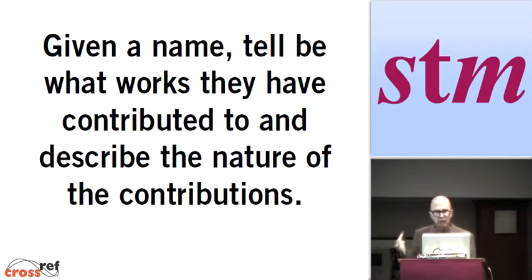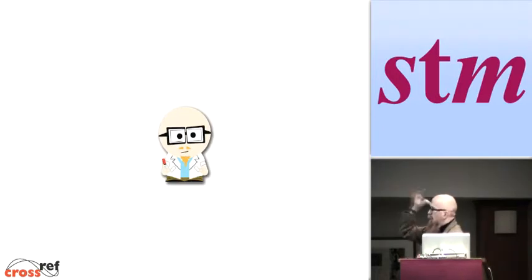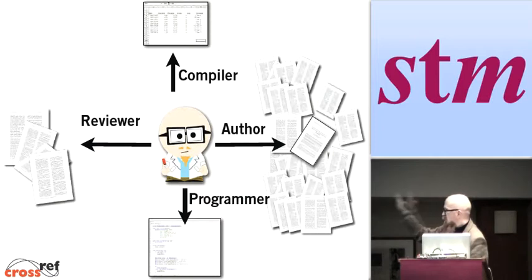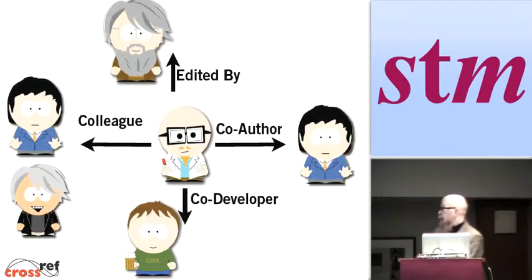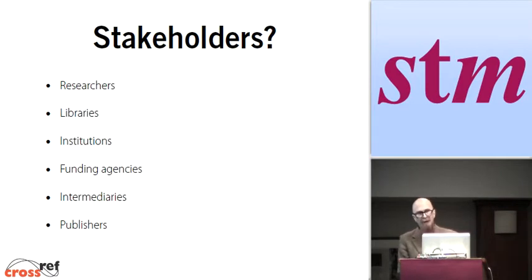Given a name, tell me what works they've contributed to and the nature of the contributions. It might be that you want to know that I compiled this dataset, that I was the author of these articles, that I programmed this program, and that I reviewed these other articles. Another fundamental thing: given a name, tell me what other names are related to the first name and tell me what the nature of that relationship is. That I was a co-author with Ed, that Ed and Chuck are my colleagues and therefore might not be suitable people for reviewing any future articles by me, that I was edited by Anthony Watkinson, that I co-developed some software with Lee Dodge.